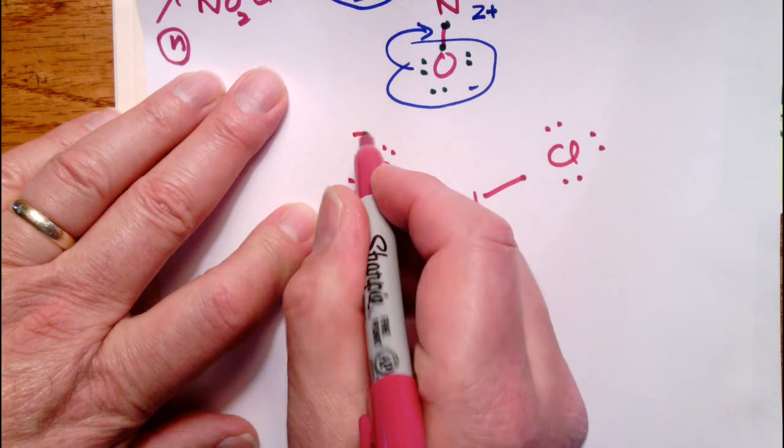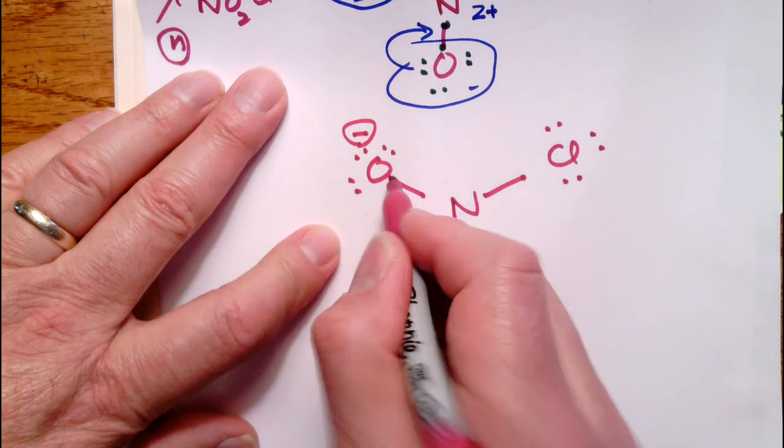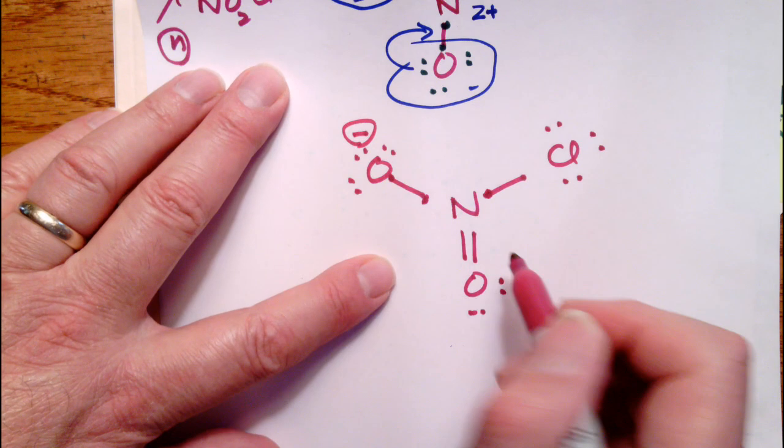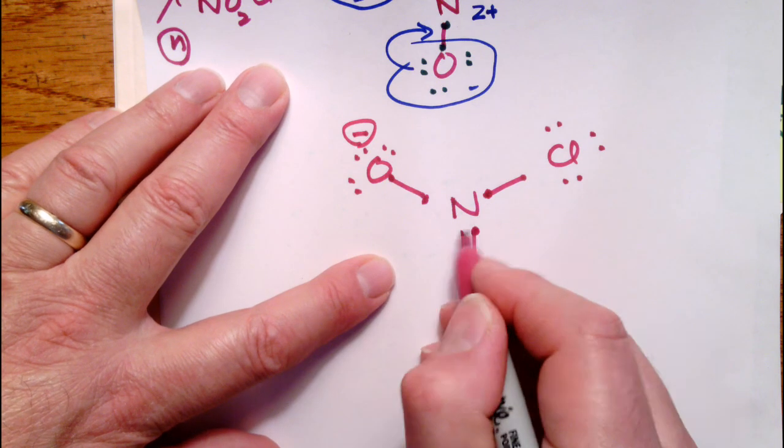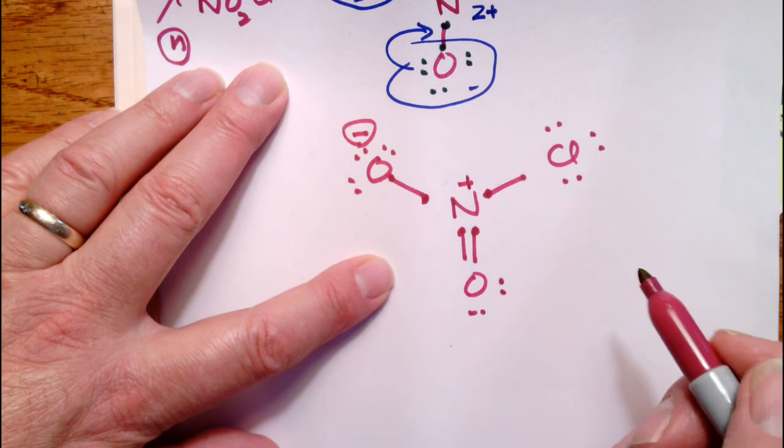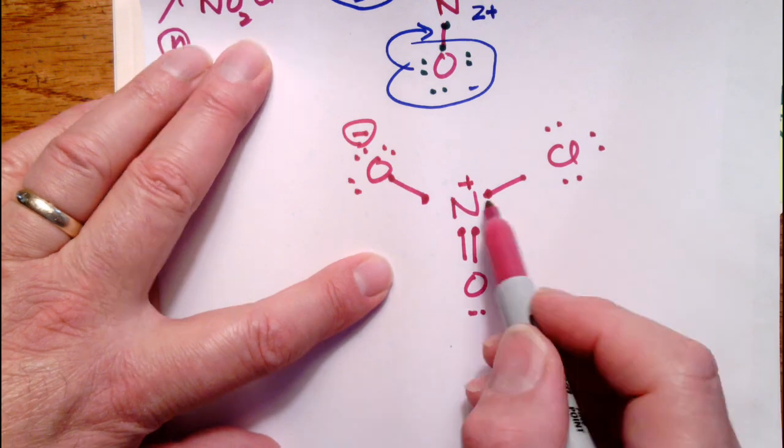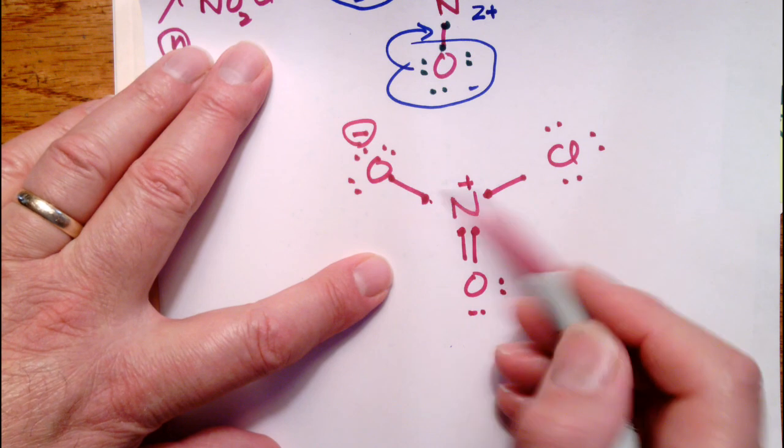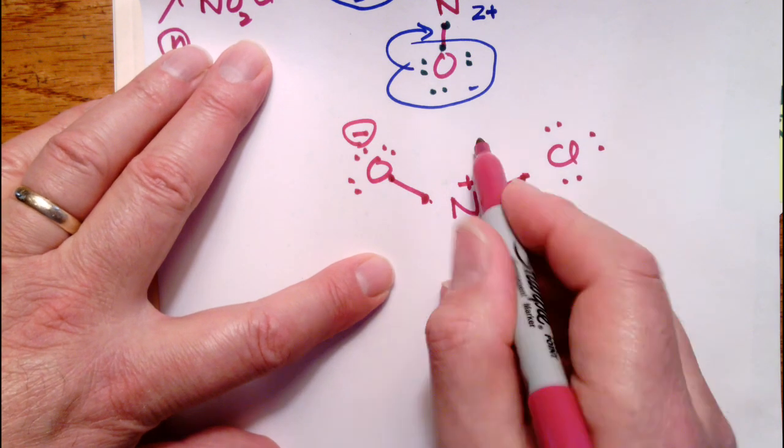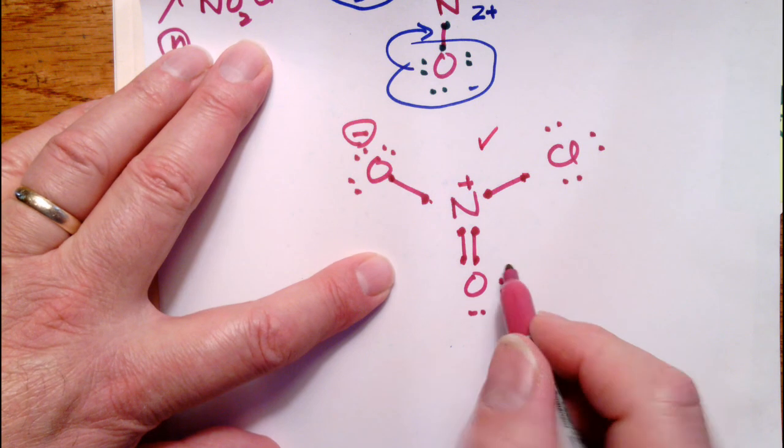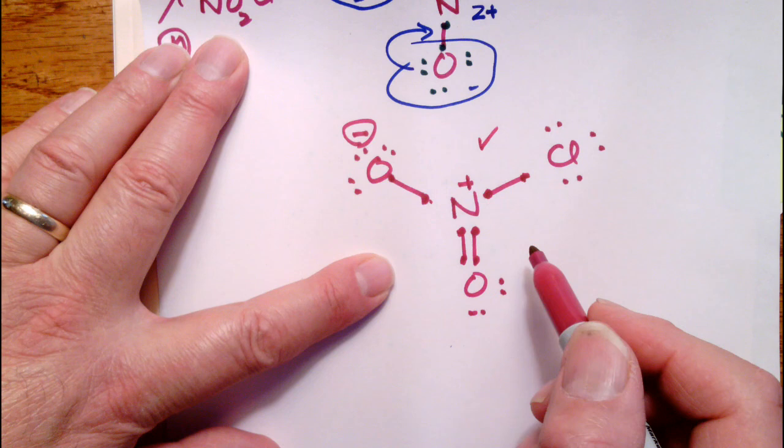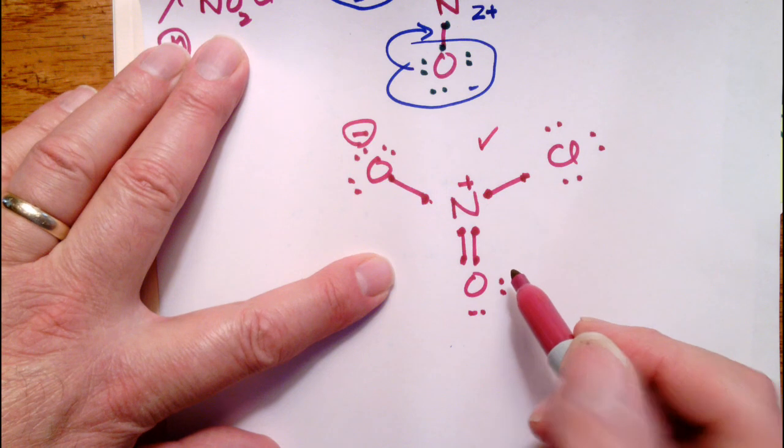So this O is negative formal charge. Nitrogen now is going to be positive because it has one, two, three, four. Should have had five, so it's positive. But it does have eight electrons. It has one, two, three, four, five, six, seven, eight. So this is happy. So this would be a structure for NO2Cl neutral.